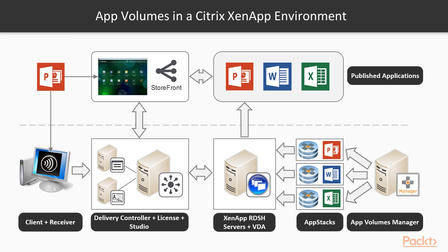As with the process described for building App Stacks for use with virtual desktop machines, the first part of the process is to build and provision a machine from which we can create App Stacks from. Remember, App Stacks need to be provisioned using the same operating system as they are going to be delivered to. So in this example for our XenApp server, the provisioning machine will be a Windows Server 2012 R2 virtual machine that is already configured with the RDSH role. This provisioning machine will be used to create an App Stack containing Microsoft Office, and once created, this App Stack will then be used to enable the RDSH server with the applications — in this example, our XenApp server.